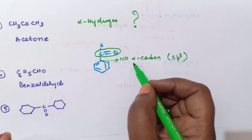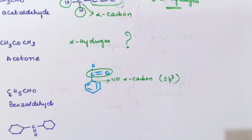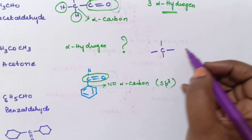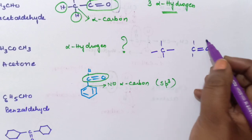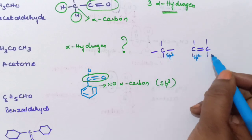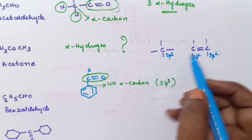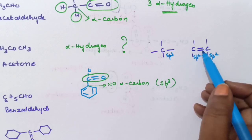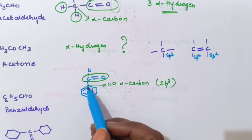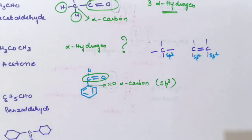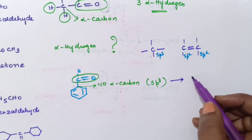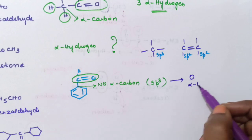Why is this not an alpha carbon? Because alpha carbon should be SP3. Only SP3 carbon is taken as alpha carbon. SP3 carbon means a carbon having only single bonds. SP2 carbon means a carbon having at least one double bond. The benzene ring carbon attached to the carbonyl carbon has double bond character — therefore it is SP2 carbon. SP2 carbon is not called as alpha carbon. So here there is no alpha carbon, and therefore the number of alpha hydrogen atoms is 0.